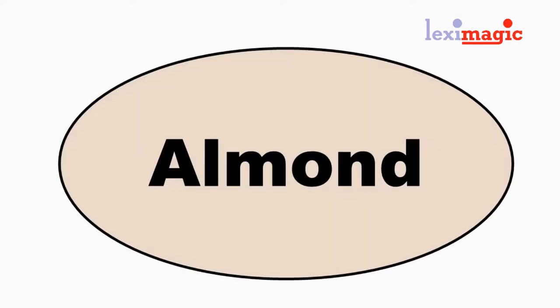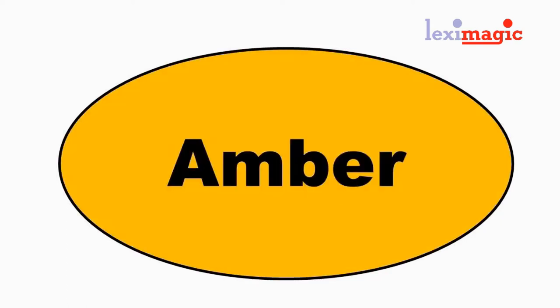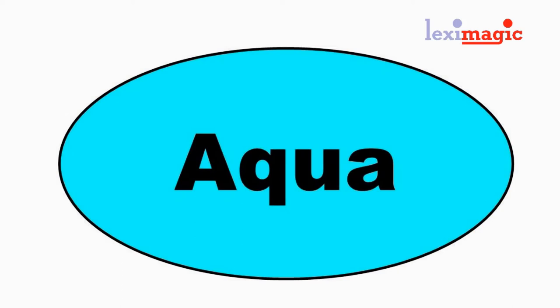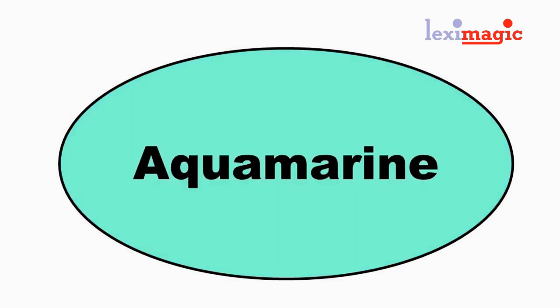Almond: a shade of brown similar to the color of almonds. Amber: a brownish yellow. Aqua: a mix of green and blue, like the color turquoise. Aquamarine: the bluish green color of the sea. Azure: the clear blue color of the sky.